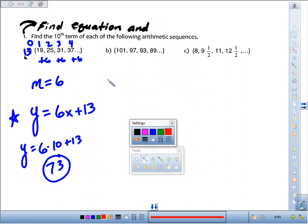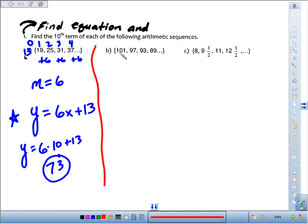For part B, 101, 97, 93, 89. In this one, we are decreasing by 4 each time. So every time we go over 1, we're going to go down 4. Term 1, 101. Term 2, over 1, we go down 4. Over 1, down 4. Over 1, down 4.